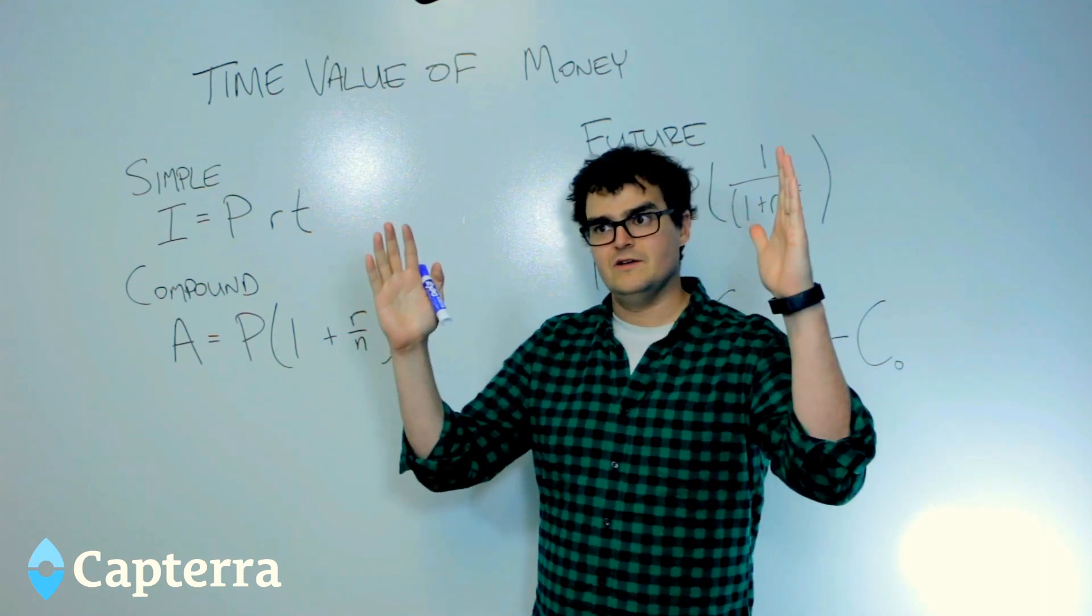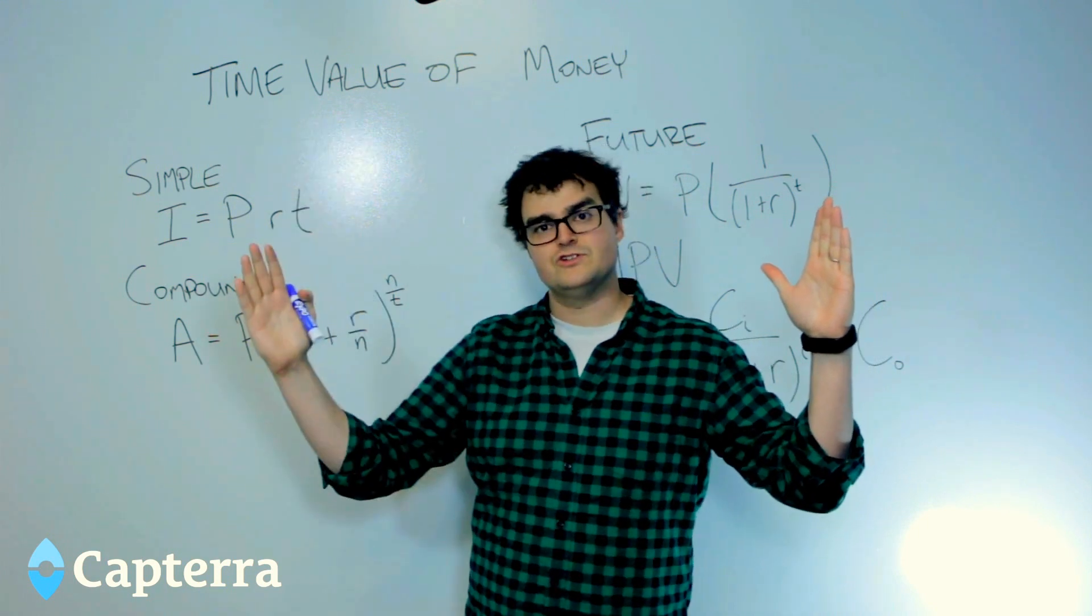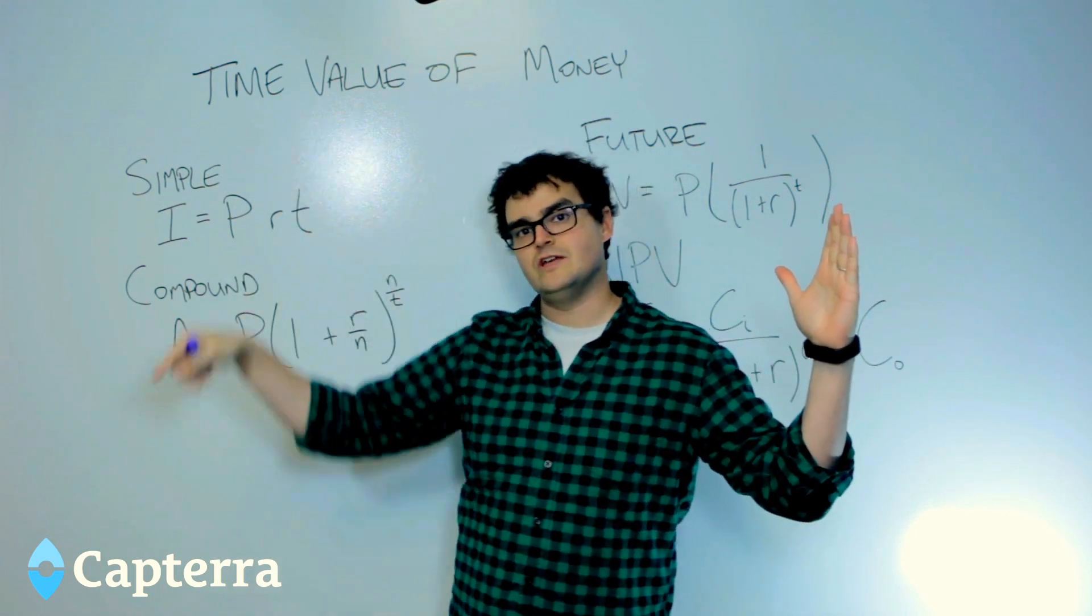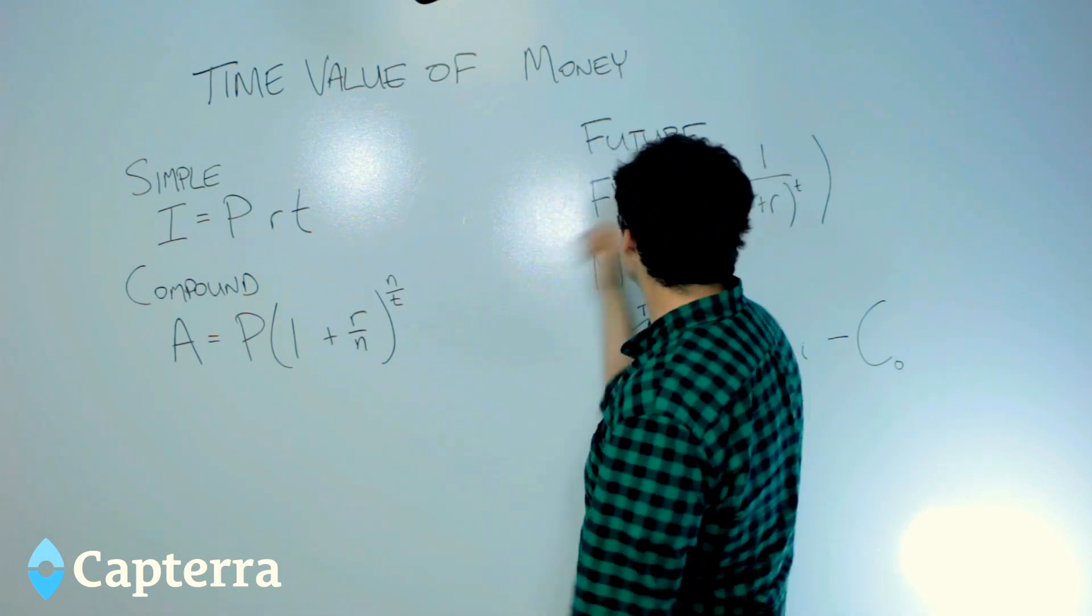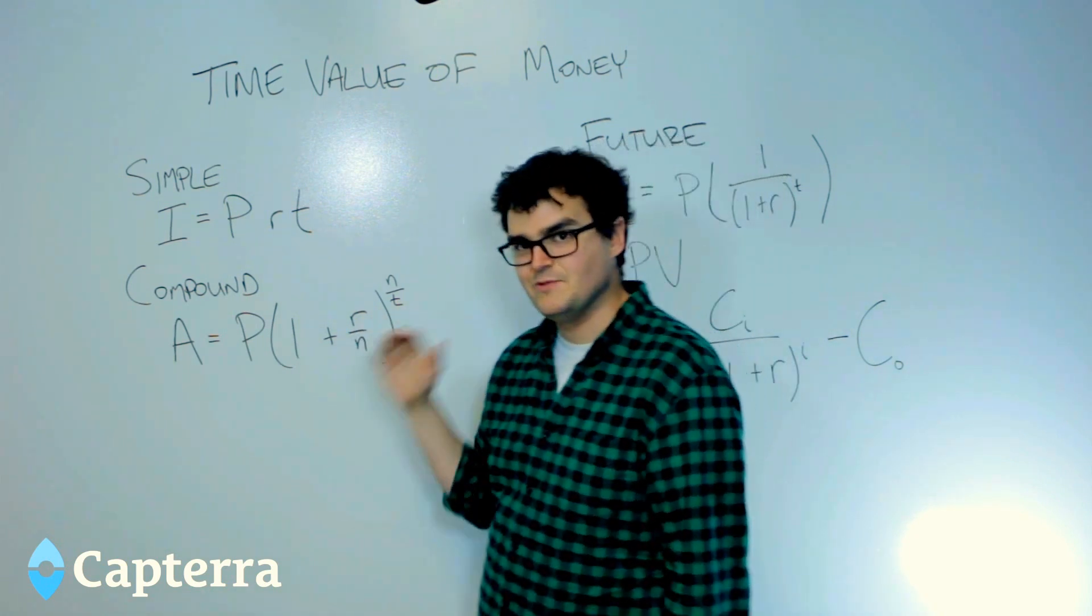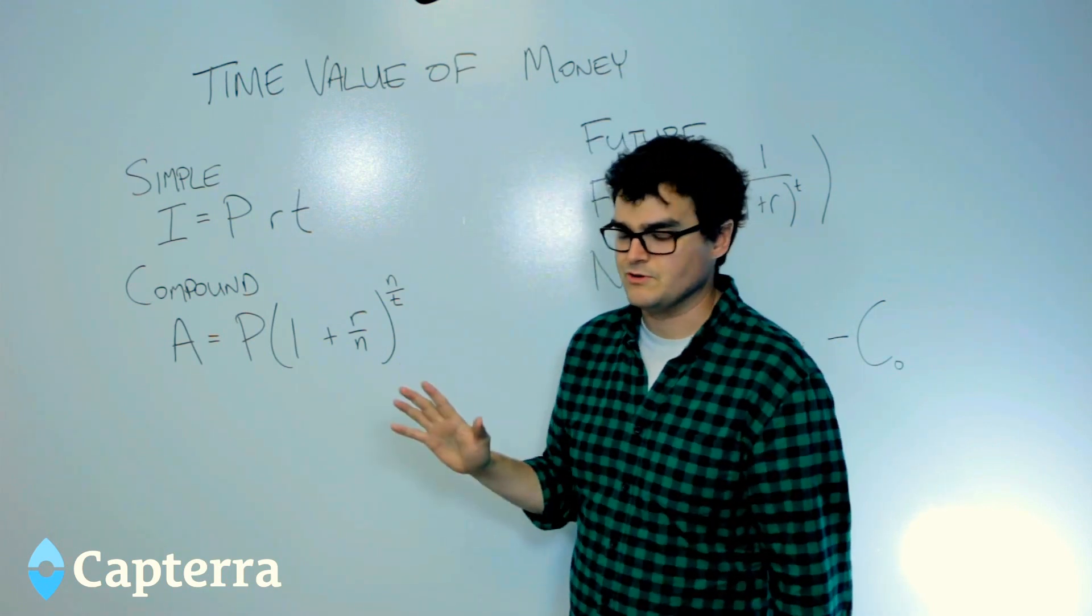Because what I did was I compounded the interest. I took the principal, I added on the first interest payment into the principal, and then I charged interest on the result. So that means that you're paying a much larger sum. Now, these are going to get exceedingly more complicated. So we don't need to get bogged down in the details. We'll run through them real quick.